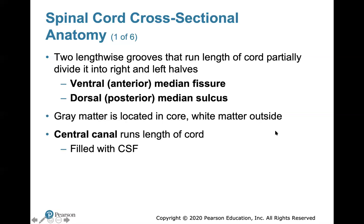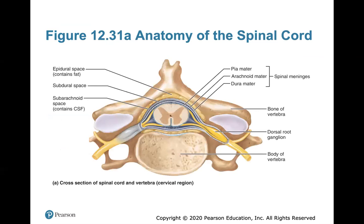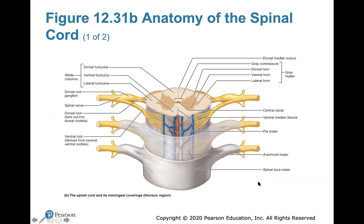The central canal runs the length of the cord and is filled with cerebrospinal fluid. There are two lengthwise grooves — the ventral and dorsal median fissure and sulcus. The gray matter is always located in the core of the spinal cord and the white matter is on the outside. This typical picture shows how the spinal cord sits between the vertebrae and how the spinal nerves come off. The three meningeal layers — dura mater, arachnoid mater, and pia mater — continue within the spinal cord as well.